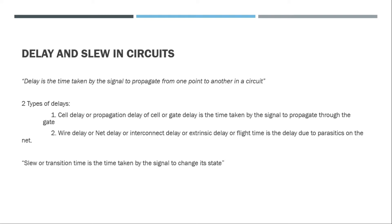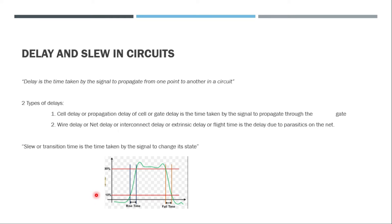Sometimes the term slew, or transition time, is the time taken by the signal to change its state — be it from zero to one or from one to zero. We usually consider the transition to be instantaneous, but that is ideal. In reality, it will take some time to rise from zero to one, and there will be overshoot before settling. Similarly, going to zero state takes some discharge time. We want the slew to be zero, but in reality that won't be the case.